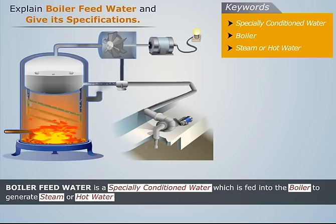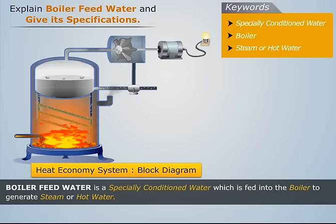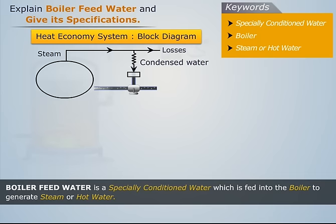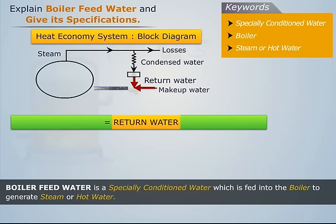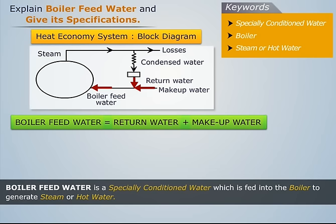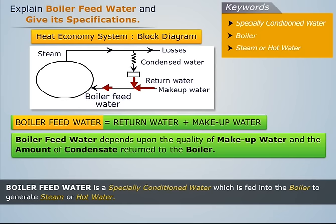Boiler feed water is generated through a system of heat economy. Steam produced in the boiler is condensed after use and returned as pure feed water, called the return water. Some fresh water, or makeup water, is then added to this return water. It is this combination of return water and makeup water which is fed into the boiler as the boiler feed water to generate steam. Note that boiler feed water quality depends upon the quality of the makeup water and the amount of condensate returned to the boiler.